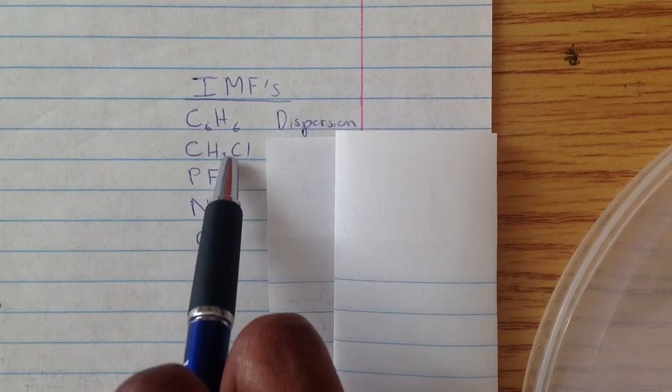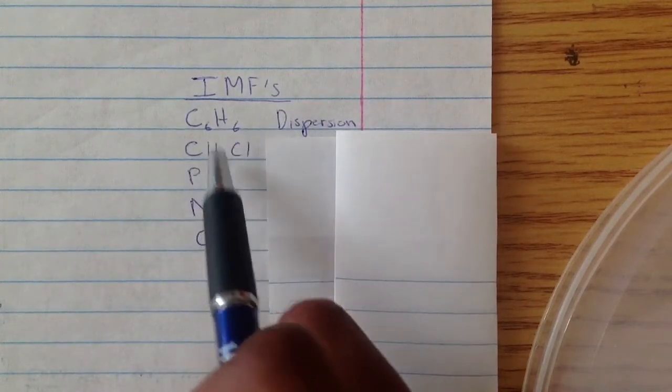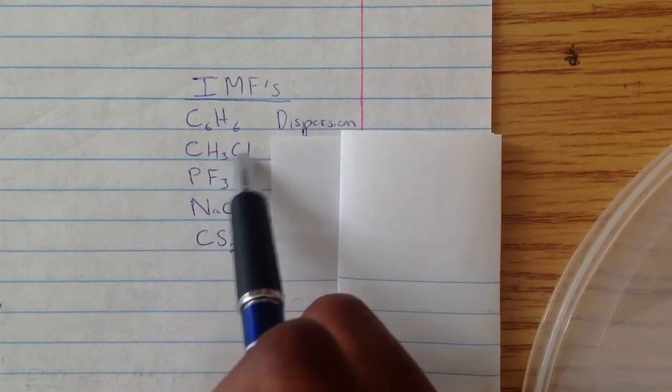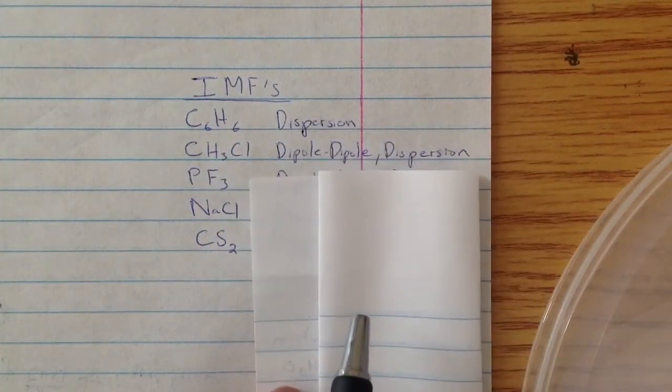You can also check to see if it has hydrogen bonding, and it doesn't because the only hydrogen bonding that occurs is between fluorine, oxygen, or nitrogen. So this is just going to be dipole-dipole and dispersion forces.